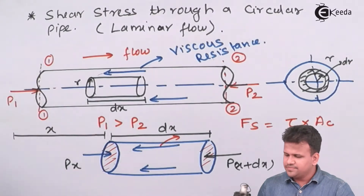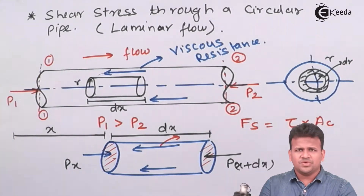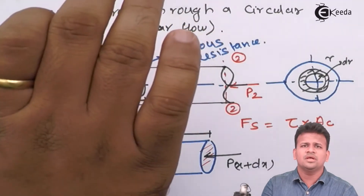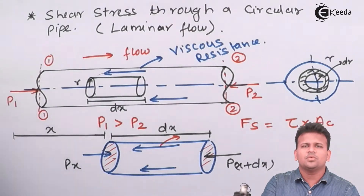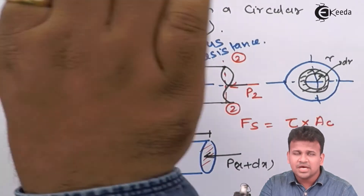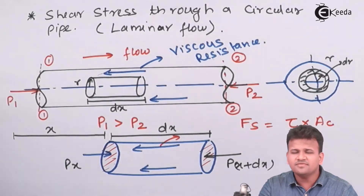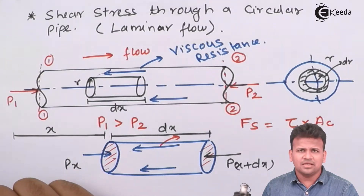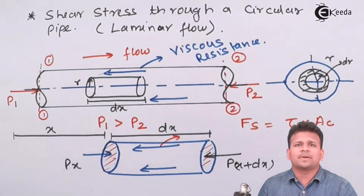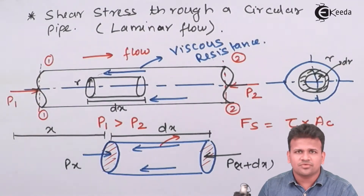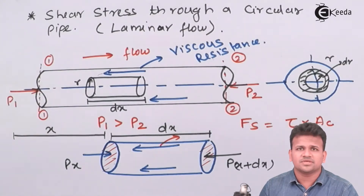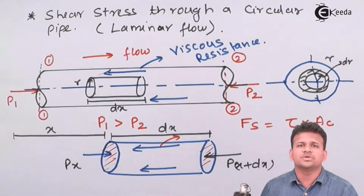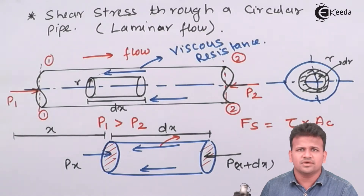Suppose you have a bottle in the horizontal direction and you have to remove the wrapper of the bottle. The force you apply to remove the wrapper is parallel to the curved surface area — that force is called the shear force, where the force is parallel to the curved surface area. So here we won't have cross-sectional area; we'll have the curved surface area of the cylinder.